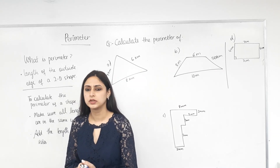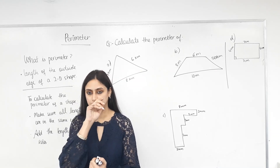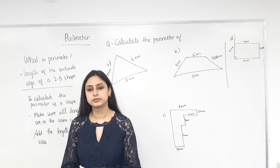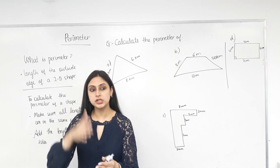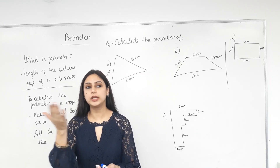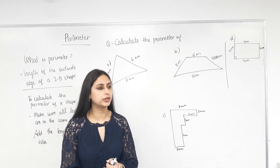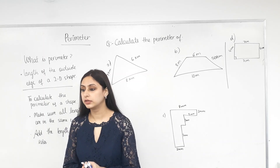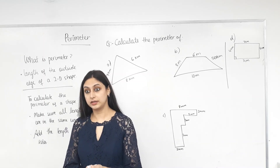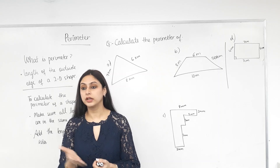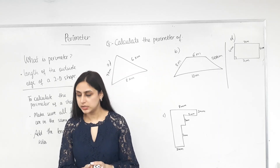What are 2D shapes? Shapes that don't go back — they only have length and width. Yep, two dimensions: length and width. Give me an example of a two-dimensional shape, please. A circle. A circle, yes. Triangle. A square.